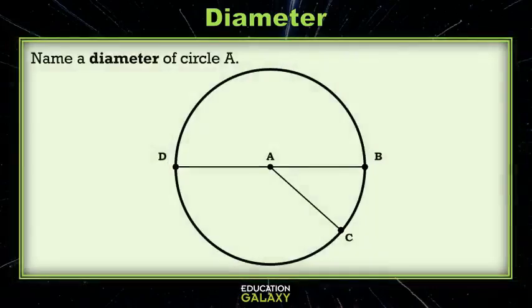Let's look at this example. We need to name a diameter of the circle. So AC, that can't be a diameter. It's not going all the way across. But DB, no, that's going across. And it passes through the center of the circle. So line segment DB. Perfect. There's our diameter.